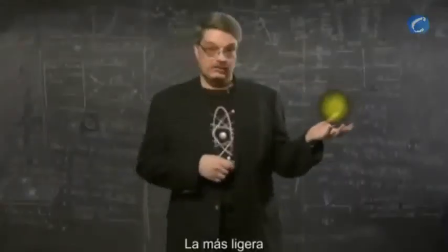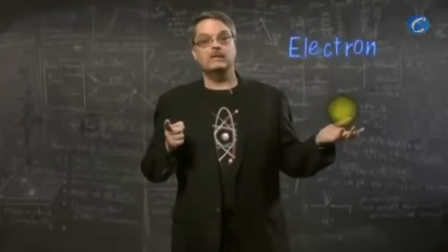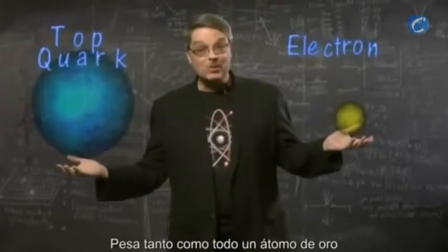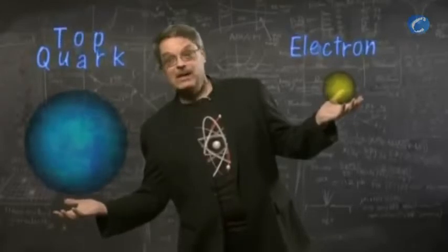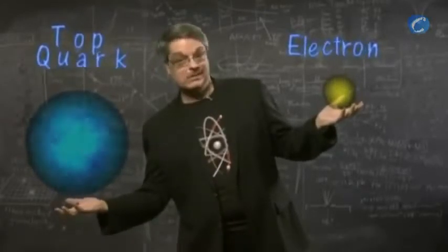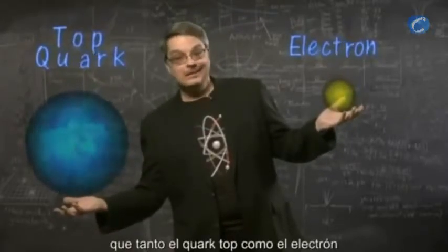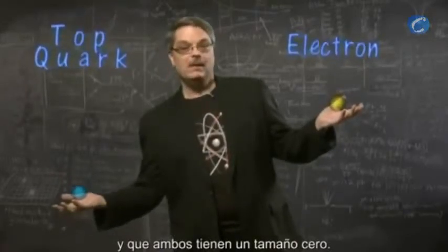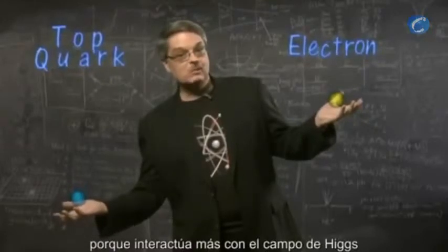The lightest of the familiar subatomic particles is the electron, while in the subatomic world, the king of mass is the top quark. It weighs about as much as an entire atom of gold — about 350,000 times more than the electron. The top quark is not more massive because it's bigger. In fact, we believe that both the top quark and the electron are exactly the same size — indeed, they both have zero size. The top quark is more massive than the electron simply because it interacts more with the Higgs field.